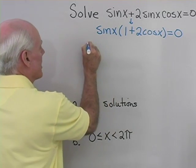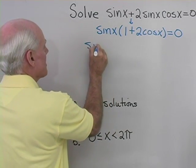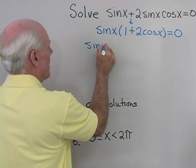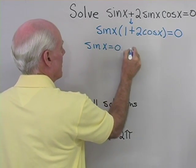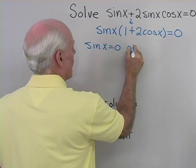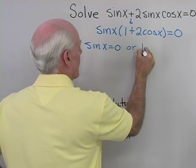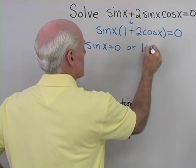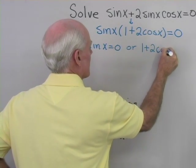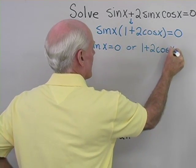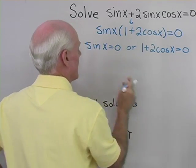Over here I'll get sine x equals 0, and over here I'll get 1 plus 2 cosine x equals 0.